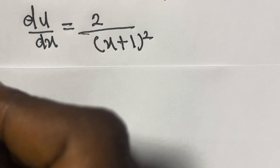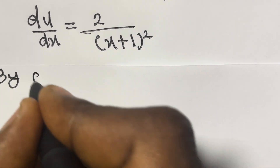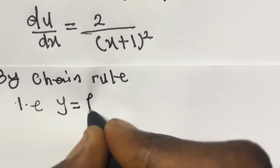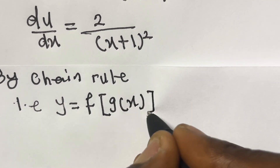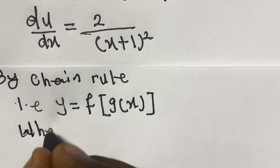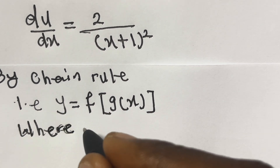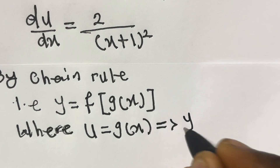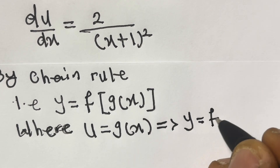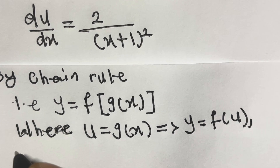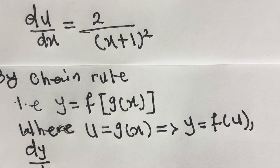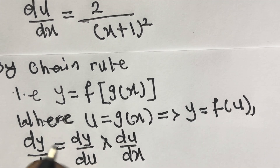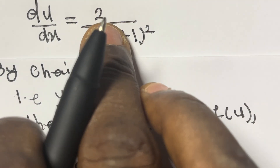By the chain rule: if y equals f(g(x)), where u equals g(x), then y equals f(u), and dy/dx equals dy/du multiplied by du/dx. This is the formula we apply.